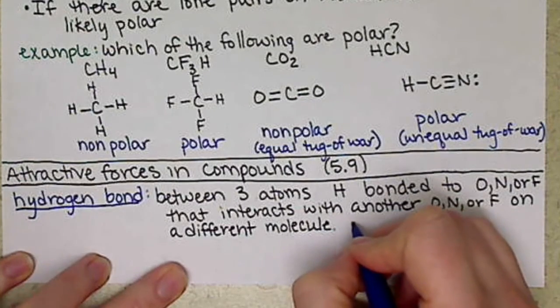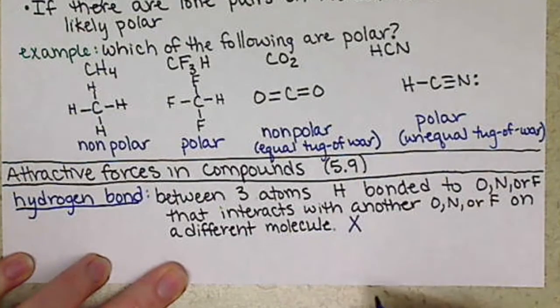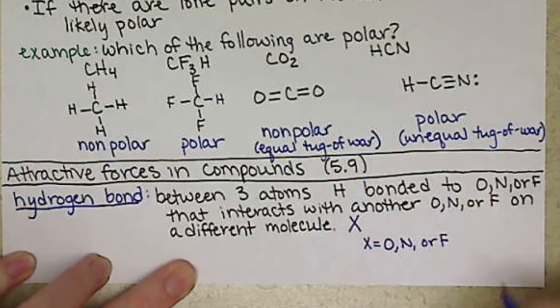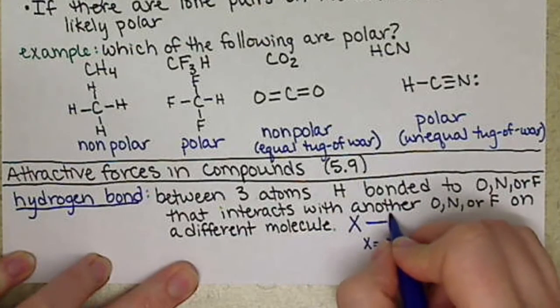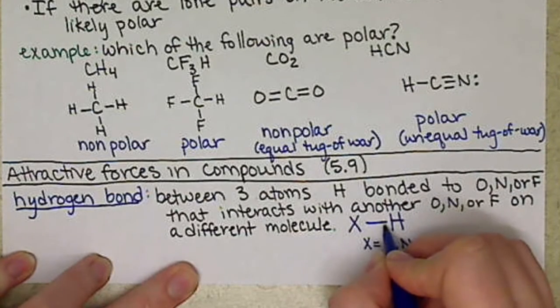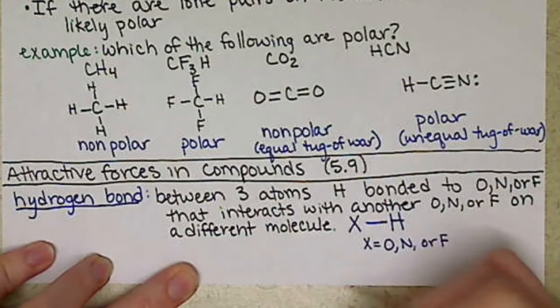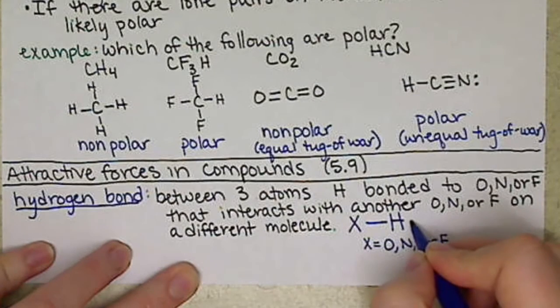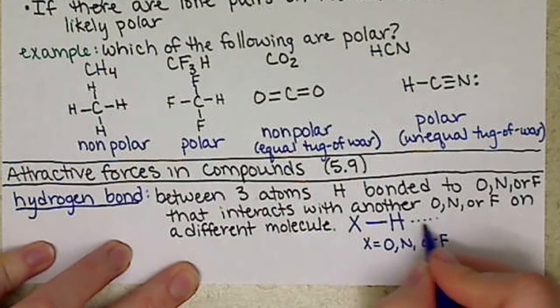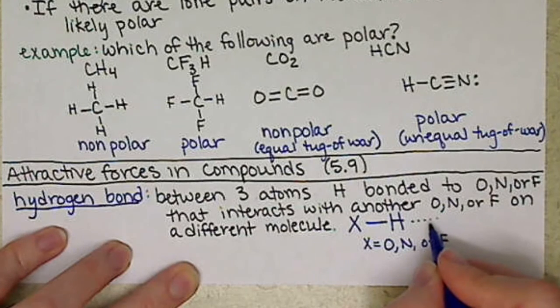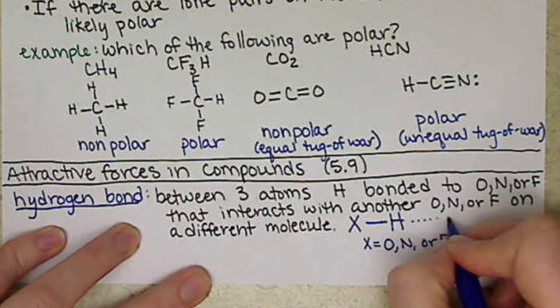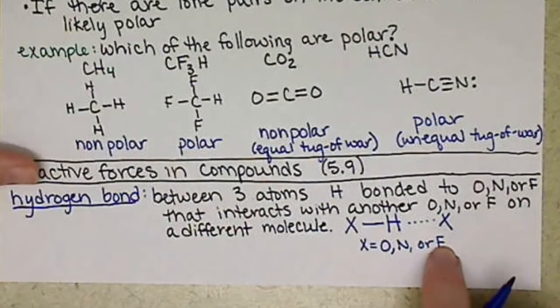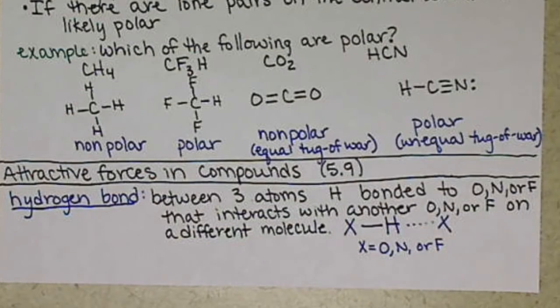We're going to have X, which X can be either oxygen, nitrogen, or fluorine. We're going to have that hydrogen actually bonded, so solid line. Then it's going to interact - interact is what makes this not an actual bond. It's more of a force. We represent that interaction by a dashed line, and it's going to interact with another oxygen, nitrogen, or fluorine.